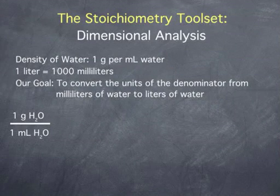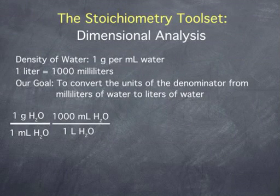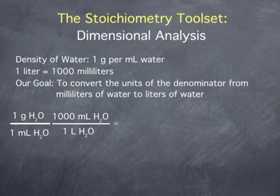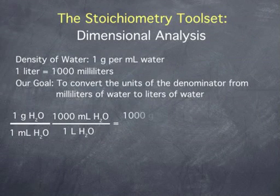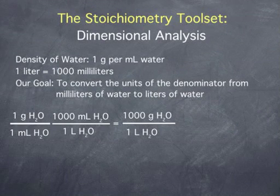Our goal is to convert the units of the denominator from milliliters of water to liters of water. We can do this by multiplying by the ratio 1,000 milliliters of water over 1 liter of water. From the above definition, we know this ratio is equal to 1, so this changes only the unit, not the quantity itself. The multiplication gives the value 1,000 and units of grams of water per liter of water. So we have achieved our goal of converting the density of water from units of grams per milliliter to units of grams per liter.